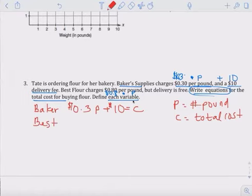Best Flour is 80 cents per pound, plus zero delivery fee. Delivery free, you don't have to write the zero, equals to the cost. Total cost. They charge the customer.